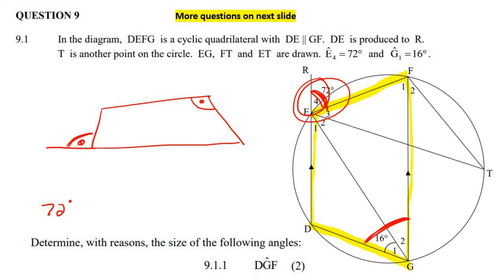and the reason will be exterior angle of a cyclic quad. So we can then say that angle DGF is equal to angle E_4, which is 72 degrees, and the reason is because it is the exterior angle of a cyclic quad.